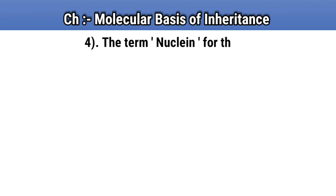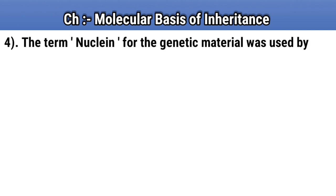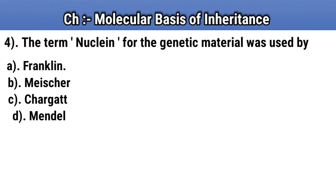Question number 4. The term nuclein for the genetic material was used by. Option A: Franklin. Option B: Miescher. Option C: Chargaff. Option D: Mendel. Answer B: Miescher.